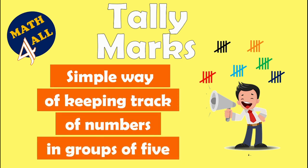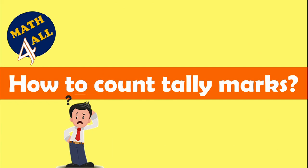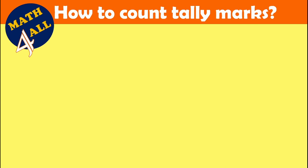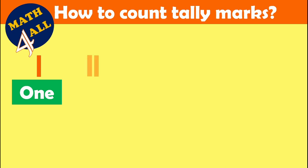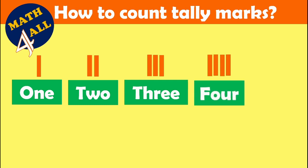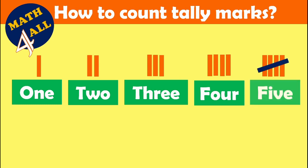How to count tally marks: a tally mark is just one line. Count with me — one tally mark, two tally marks, three tally marks, four tally marks. And when we get to the fifth mark, we cross it. Here we have five tally marks.